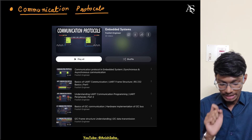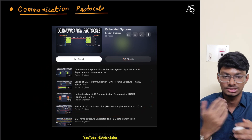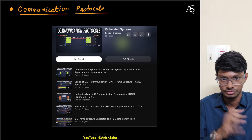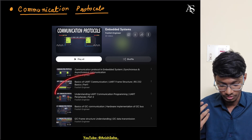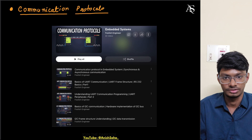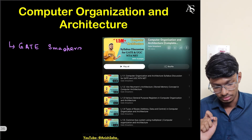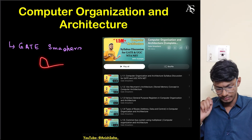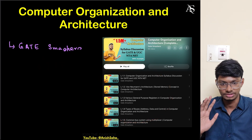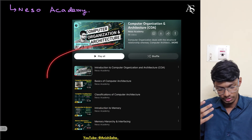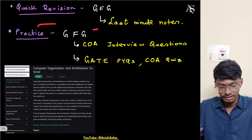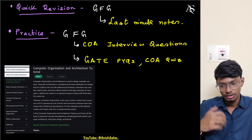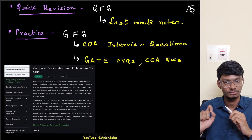Communication protocols like SPI and I2C are not heavily tested in interviews, but have a basic idea since they are used in industry. For computer organization and architecture, follow Gate Smasher in Hindi or Nisha Academy in English. For quick revision use GFG last minute notes, and search for COA interview questions and Gate PYQs. COA is less important than OS and C programming.